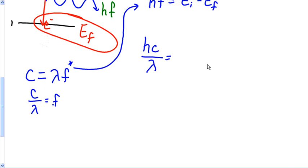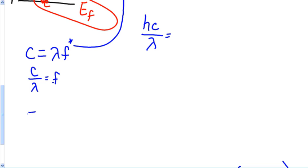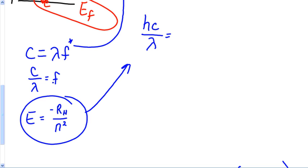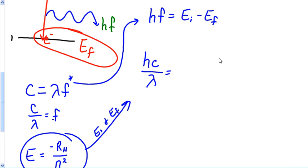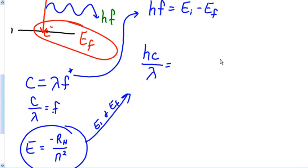In another video we learned if you want to find the energy for any electron inside of a hydrogen atom, we can just use this little negative rh over n squared equation. So what I'm going to do next is I'm going to take him and I'm going to substitute him for my ei and my ef. So I'm going to substitute. So let's go back up here. So in place of ei, I'm going to write negative rh over ni squared minus negative rh over nf squared. And believe it or not, I'm done.